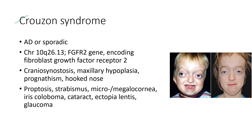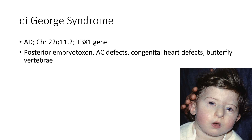Next is Crouzon syndrome. It can be autosomal dominant or sporadic. The features include craniosynostosis, maxillary hypoplasia, prognathism, and hooked nose, as shown in the clinical images. The ocular features include proptosis, strabismus, micro- or megalocornea, iris coloboma, cataract, ectopia lentis, and glaucoma.